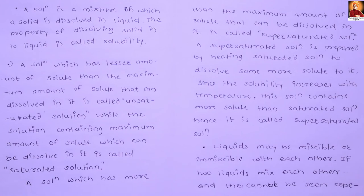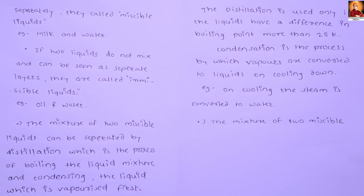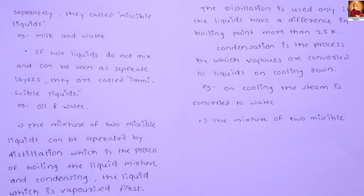Liquids may be miscible or immiscible. Two liquids that mix with each other and cannot be seen separately are called miscible liquids — for example, milk and water. If two liquids do not mix and can be seen as separate layers, they are called immiscible liquids — for example, oil and water.